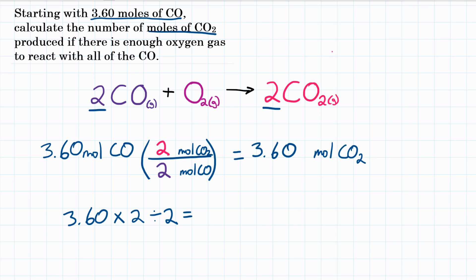And that makes sense, because for every 2 COs, we get 2 CO2s. So final answer, for 3.6 moles of carbon monoxide reacting, how many moles of carbon dioxide will be produced? 3.60 moles of CO2.